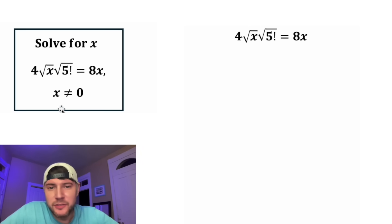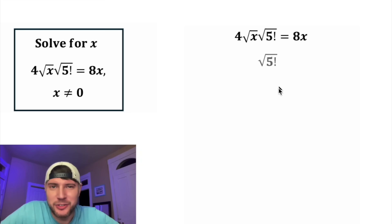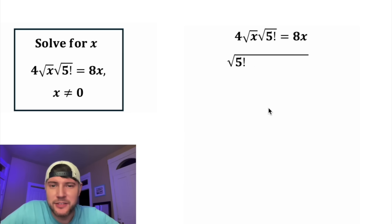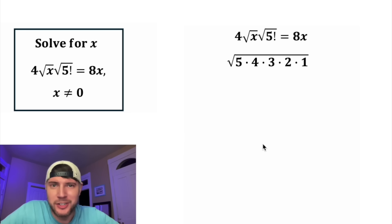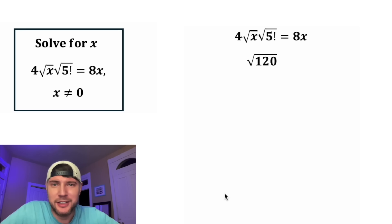First, let's focus on the square root of the quantity 5 factorial. 5 factorial means the same thing as 5 times 4 times 3 times 2 times 1, and after you multiply all these, we get 120.